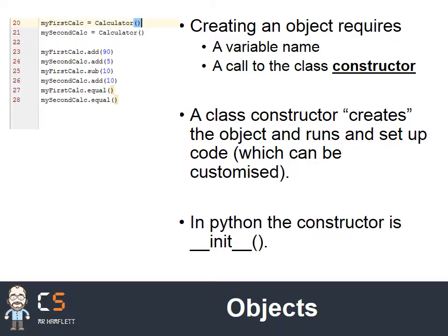Here we have two calculators being instantiated. This is really here to exemplify the idea that when you have a class, you can create more than one object from it - we're not just talking about one calculator, we have two. When you create an object, we need the name of the class we're creating the object from, and that needs to be stored inside a variable. The variable can be named whatever you want, and it will store a reference to that object. When the object is instantiated, it calls the class's constructor - which in Python is the double-underscore init double-underscore method.